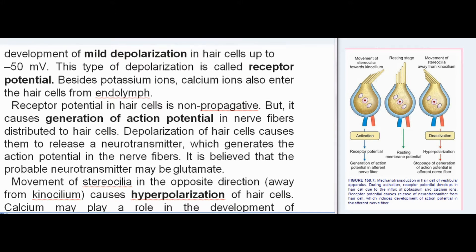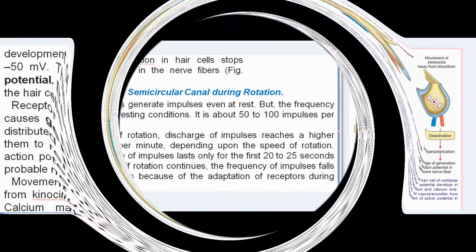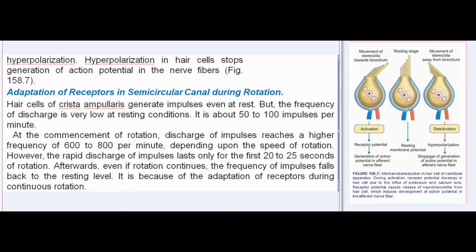Besides potassium ions, calcium ions also enter the hair cells from endolymph. The receptor potential in hair cells is non-propagative, but it causes generation of action potentials in nerve fibers distributed to hair cells. Depolarization causes the hair cells to release a neurotransmitter — believed to be glutamate — which generates the action potential in nerve fibers. Movement of stereocilia in the opposite direction (away from the kinocilium) causes hyperpolarization, stopping generation of action potentials in nerve fibers.